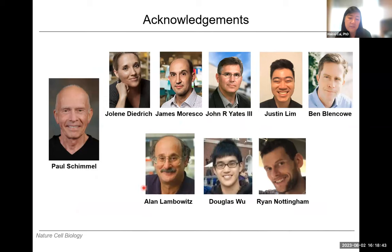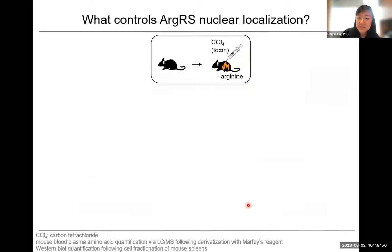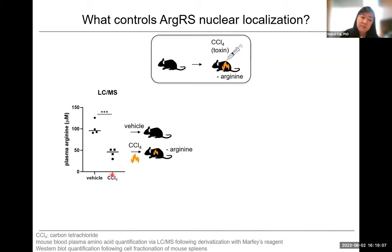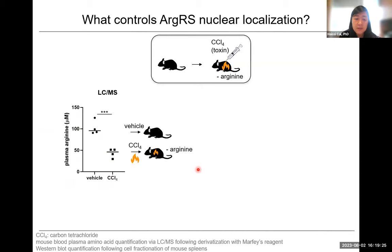We were interested in what controls ArgRS nuclear localization outside of the protein complex. What's quite fascinating is that during inflammatory conditions, the body experiences a drop in arginine levels. We mimicked that by injecting mice with CCL4, a liver toxin, and if you measure plasma arginine levels, they drop by about half. This is really widespread and associated with many inflammatory conditions — after surgery, cancer, viral infections, autoimmune disorders. Any time you have inflammation, which accompanies all major diseases, you see this systemic drop in arginine.